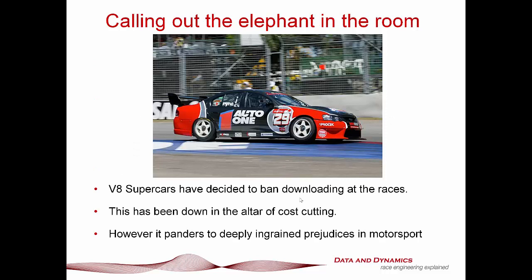First things first, I need to call out the elephant in the room and what inspired this tutorial in the first place. V8 Supercars have just decided to ban downloading data for the cars at the most recent race meeting at Eastern Creek. I've also heard that they're moving to ban tri-axis G-meters. Supposedly this is done on the altar of cost cutting and to try and improve the show. All this is doing is pandering to deeply ingrained prejudices in motor racing.